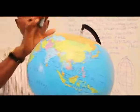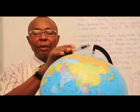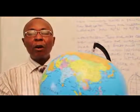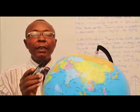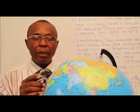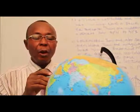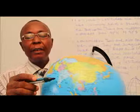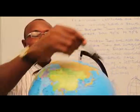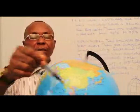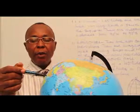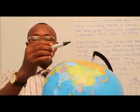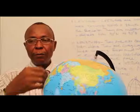Latitudes are both in the north and in the south. They run north down to the south of a line called the equator. The equator is the imaginary line that divides the earth's surface into two equal parts. So latitudes run north and south of the equator.